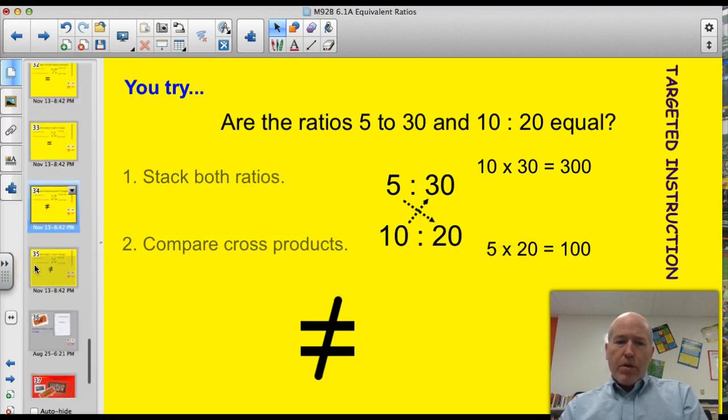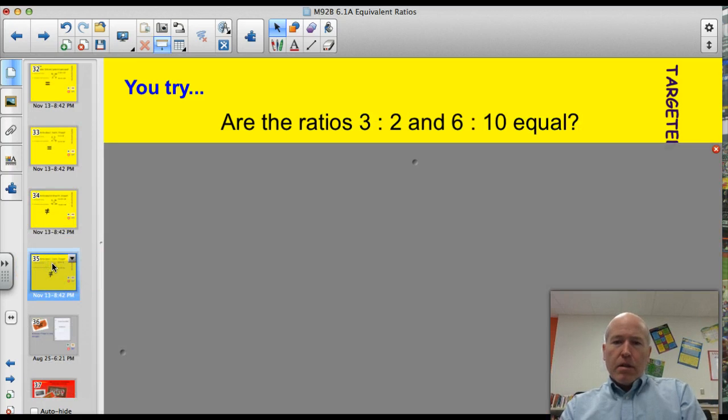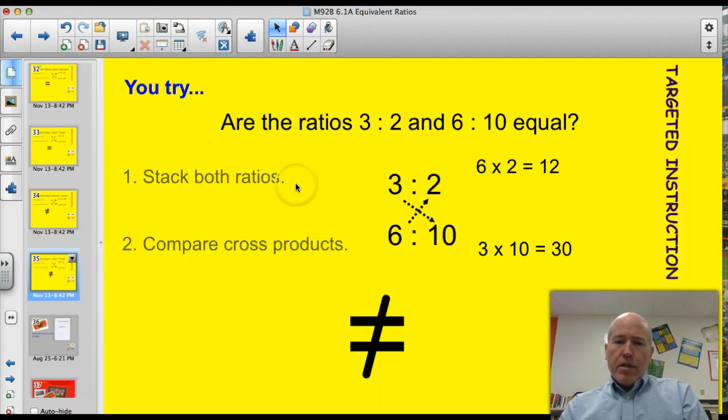You got one more opportunity to impress me tonight. Go ahead and pause and try to compare these two ratios. Go. Let's see how you did. Stack them. 3 to 2, 6 to 10. Compare cross products. 6 times 2 is 12, 3 times 10, 30. Not equal. I kind of knew that was coming too, didn't you? Did you look how this one was 3 to 2? We had a larger number on this side of the ratio. And then this is 6 to 10. So I was kind of thinking that wasn't going to work out the way I planned.